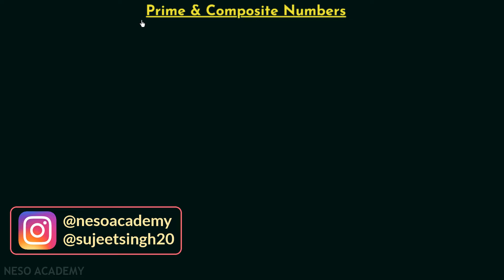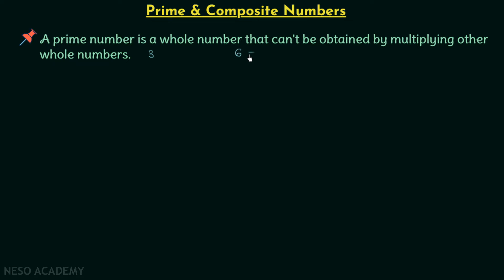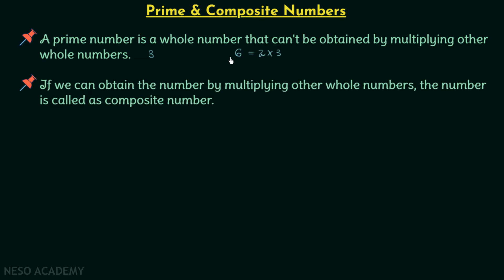Prime numbers are the whole numbers that cannot be obtained by multiplying other whole numbers. For example, the number three cannot be obtained by multiplying two other whole numbers. If we take number six, however, six is a whole number we can get by multiplying two and three. So six is a whole number obtainable by multiplying other two whole numbers, and therefore six is not a prime number — it is a composite number. A composite number is one we can obtain by multiplying other whole numbers.